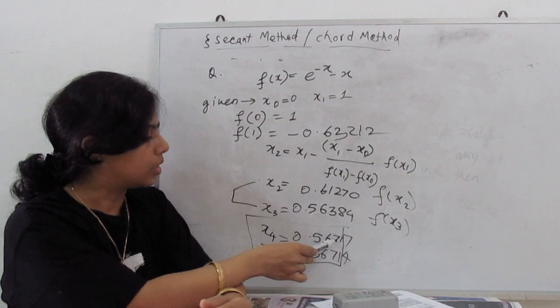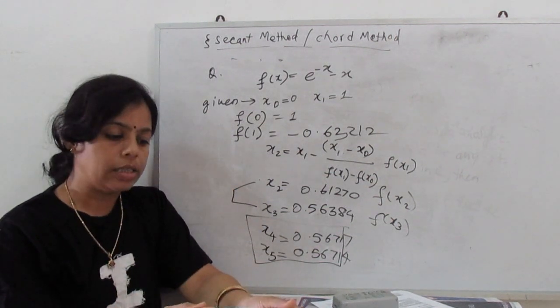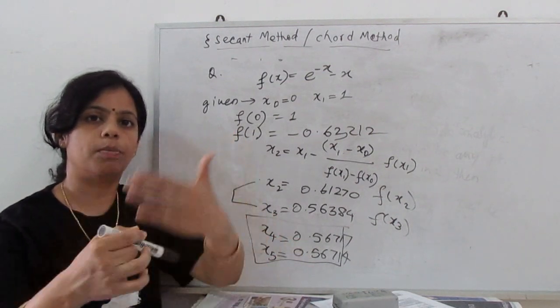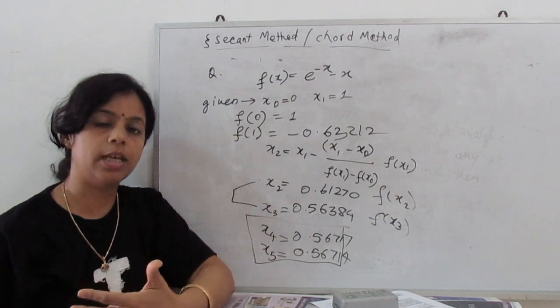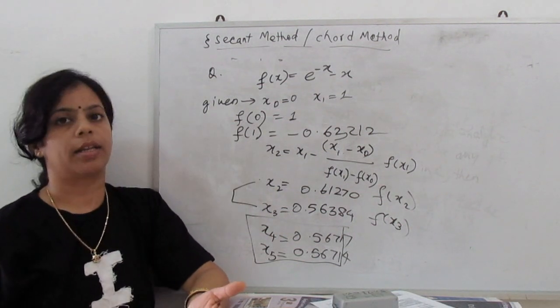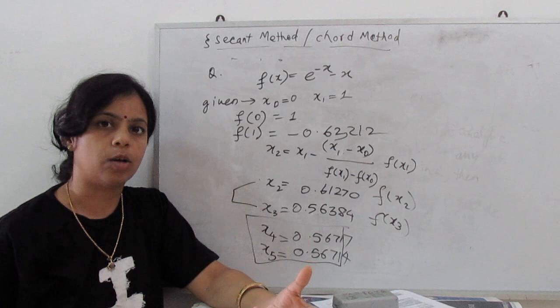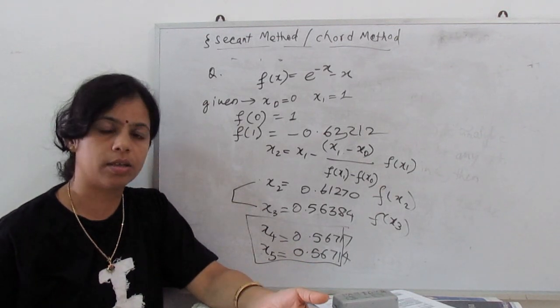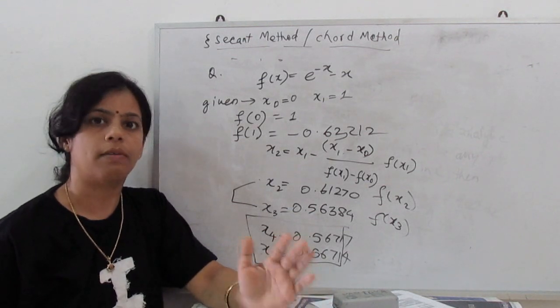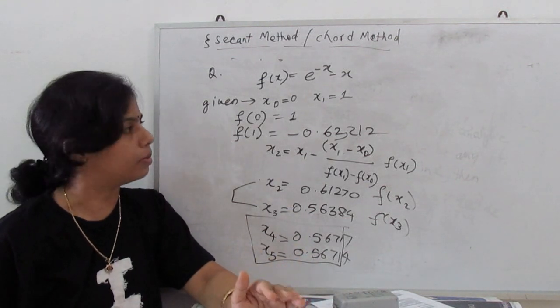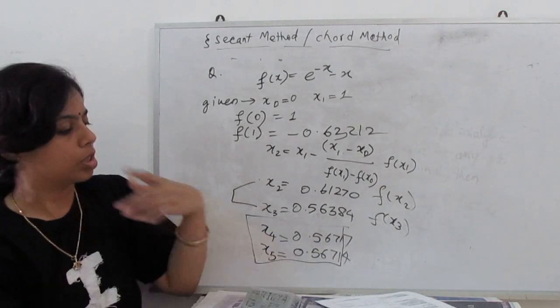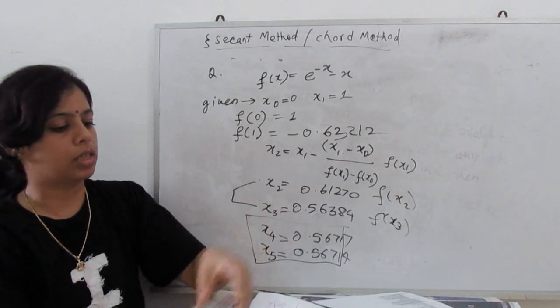The main thing is that our calculations must be correct. If we make mistakes like skipping a minus sign, our answer will be wrong. If our calculations are correct, we will definitely get the correct answer. This is the secant method.